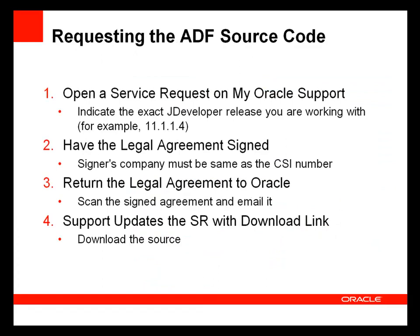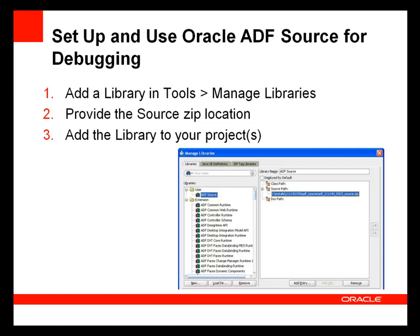To request the ADF source code, you simply open a service request at My Oracle Support. You indicate the exact JDeveloper and ADF release that you are working with — 11.1.1.3 or 11.1.1.4, for example — and you'll be sent a legal agreement for signature. Once the legal document is signed and returned to Oracle, support will provide you with a download link for the ADF source. Once you have the source, the next step is to import it into JDeveloper. In the Tools menu, choose Manage Libraries and create a new library for the ADF source, providing the zip file you've downloaded as the source path. You can then add this library to any projects that you need to debug.